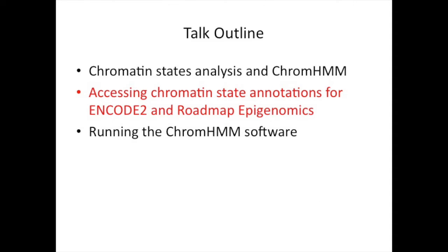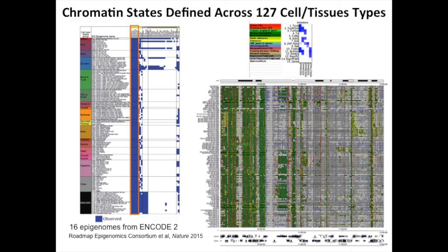So how do we actually go about accessing these existing chromatin state annotations? I'm going to focus on the set produced as part of the recent Roadmap Epigenomics publications, noting that 16 of these 127 cell types were based on data generated by the ENCODE project. One issue is that we need a common set of marks across the states to avoid confounding downstream analysis. As part of the roadmap effort, we took the five marks common across all cell types and learned a 15 chromatin state model, giving annotations across 127 cell types.